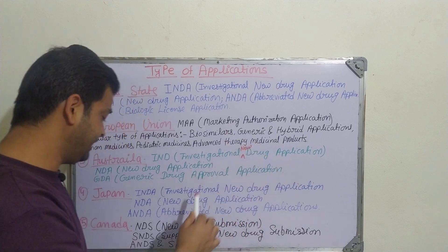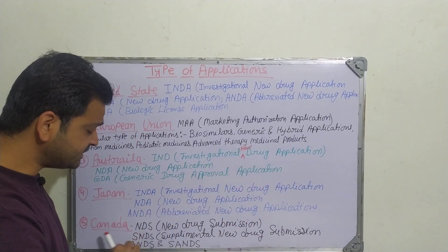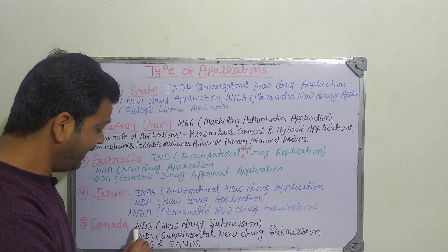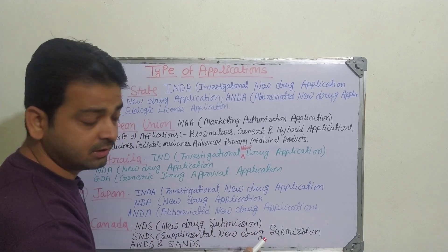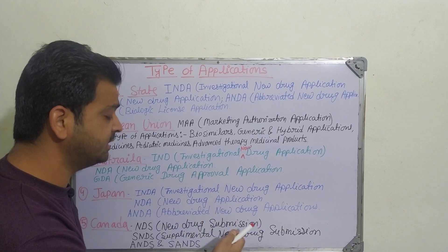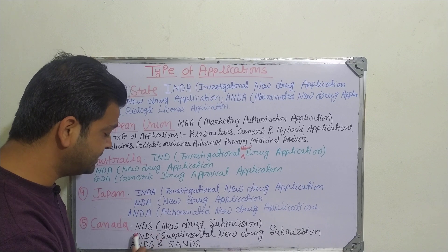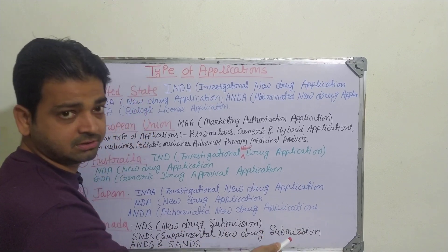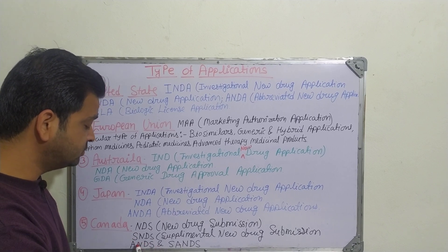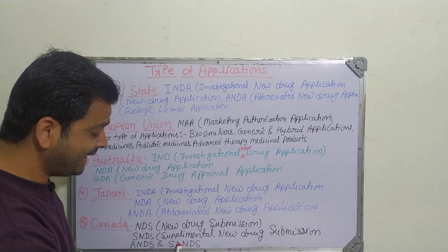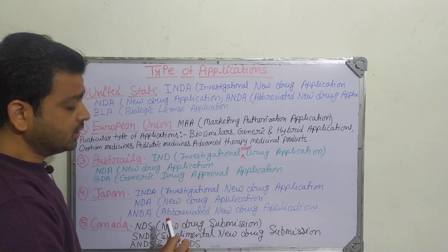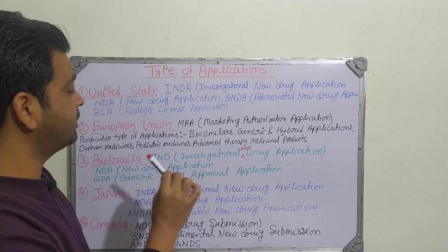The fifth country is Canada. Canada follows the same concept but with slightly changed abbreviations. Instead of 'Application,' Canada uses 'Submission.' So we have: NDS — New Drug Submission, SNDS — Supplemental New Drug Submission, ANDS — Abbreviated New Drug Submission, and SANDS — Supplemental Abbreviated New Drug Submission.